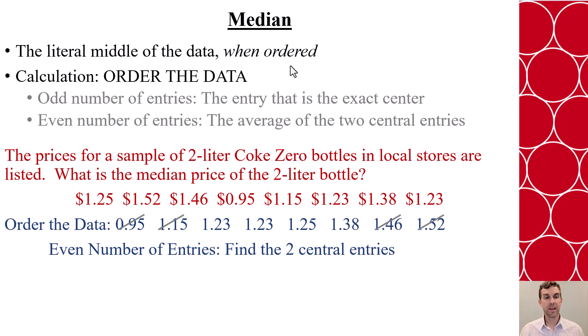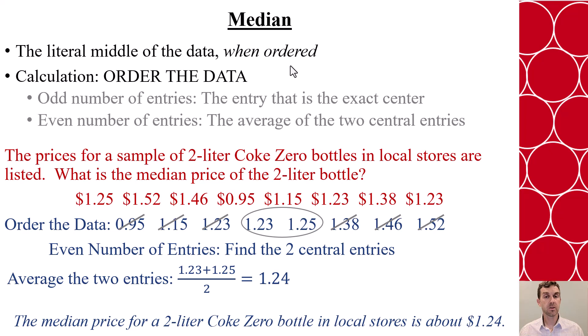So I'm gonna mark them off from the outside inside and see that I'm left with $1.23 and $1.25. Since there's two of them there, I will average them together to get $1.24. So the median price is $1.24 for the Coke Zero bottle. It's not a number that's in the entries; it's the center of those two most central ones.